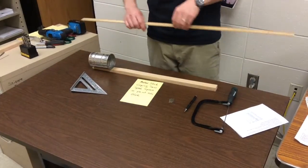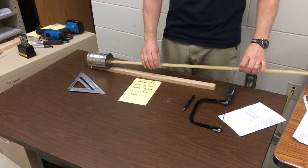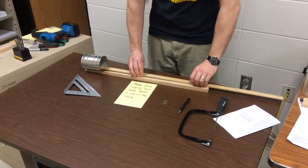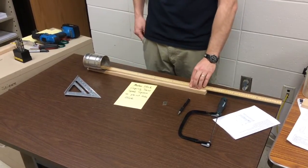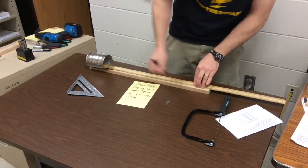To place the frets at the correct distance from where the string ends, place the meter stick into the can so it's touching the inside of the can. Then mark where the fret locations should be.